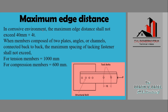In a corrosive environment, the maximum edge distance shall not exceed 40 mm + 4 times the thickness. When members are composed of two plates, angles, or channels connected back to back, the maximum spacing of tacking fasteners shall not exceed: for tension members — 1000 mm, and for compression members — 600 mm. These tacking bolt holes are not in use currently but the code still specifies limits.